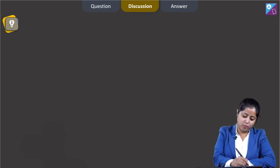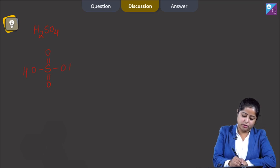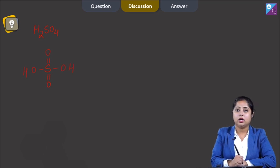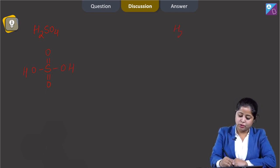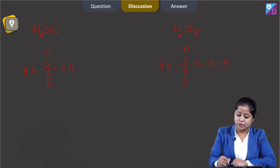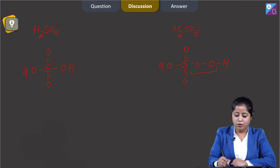Let us draw the structures. Number 1, H2SO4: S has 2 double bonds O, then OH, again OH. Number 2, H2SO5: S double bond O, double bond O, OH, OOH. Here we can see that there is a peroxy linkage.